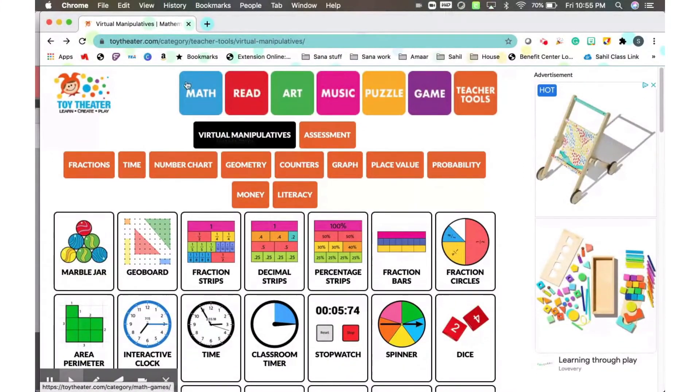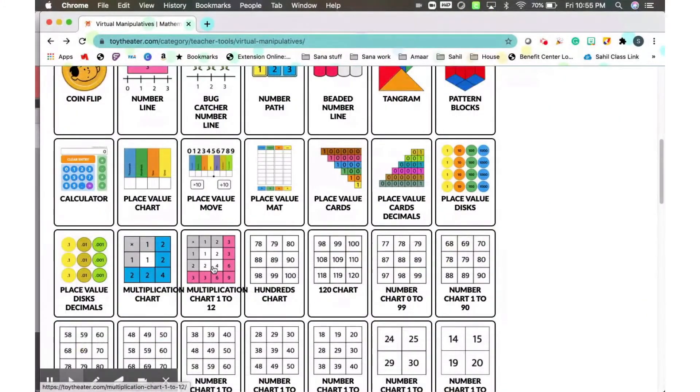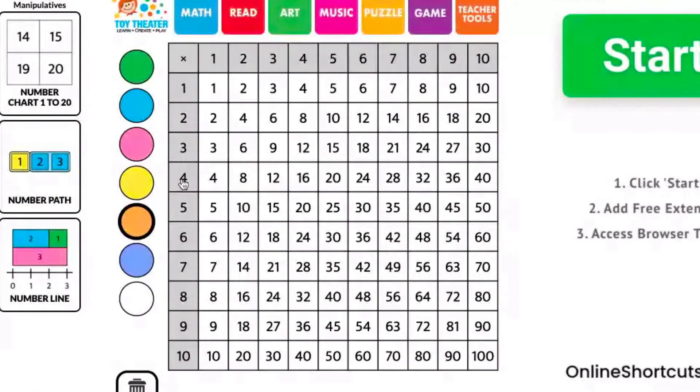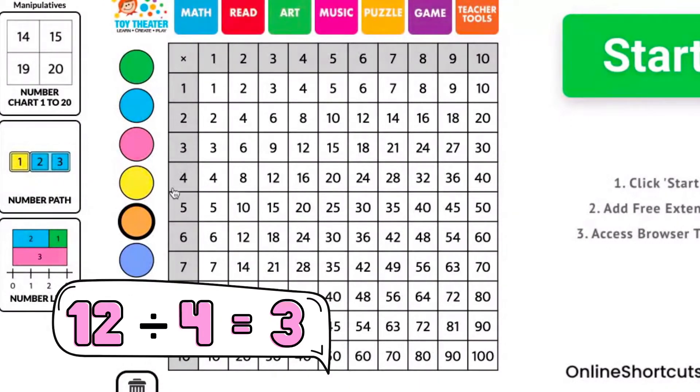Another great tool to use on toy theater is your multiplication chart. Let's do the example 12 divided by 4. We're going to first find the divisor 4, slide to 12, and the answer is 3.